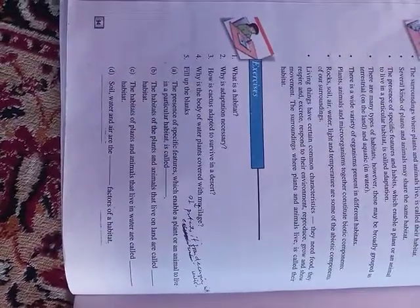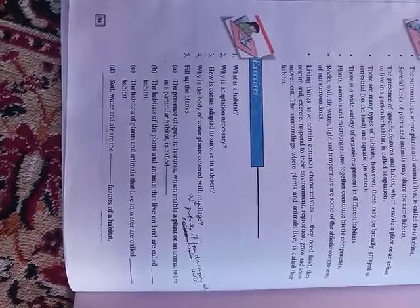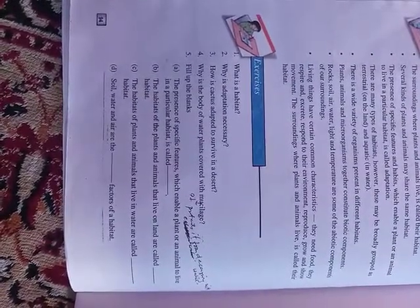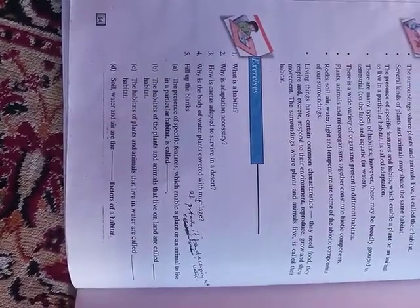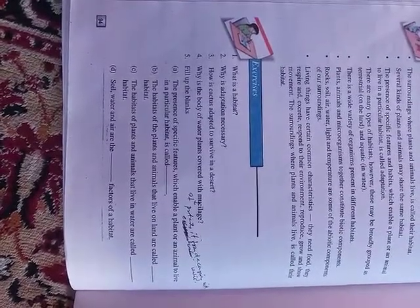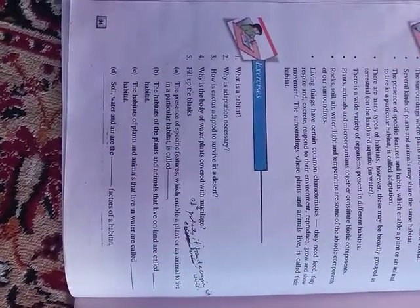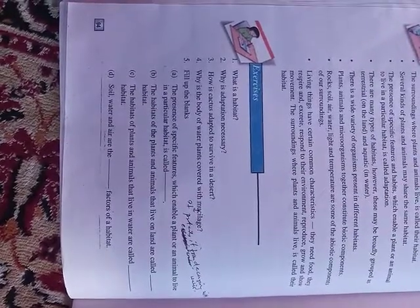There are certain adaptations that help the cactus plant survive in the desert. First of all, it has a fleshy green stem which prevents the loss of water. On this stem, it has leaves which are modified to thorns.